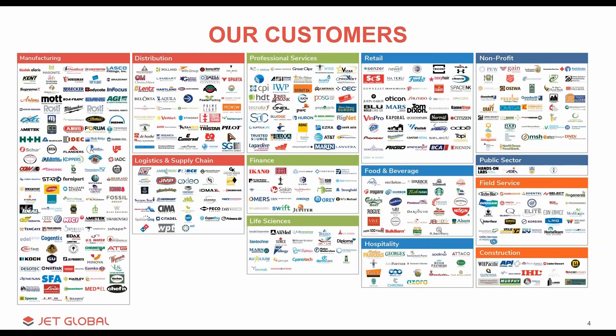This slide always puts a smile on my face. It represents the great diversity in our customer base. While it's far from an exhaustive list, it illustrates the various industries and types of organizations who find value in our solutions — from manufacturing to life sciences to nonprofits. Jet really has something for just about any type or size of organization. And if you look really closely, maybe squint a little bit, you can find your company logo.